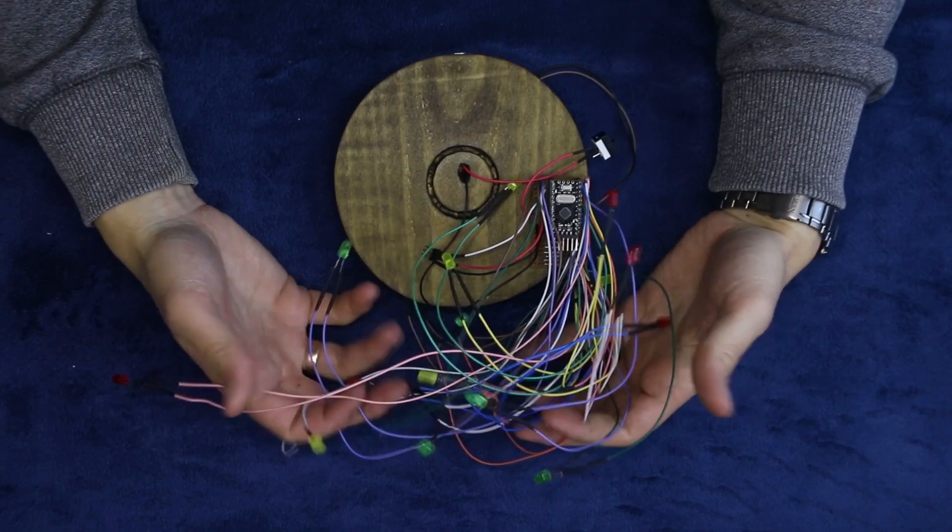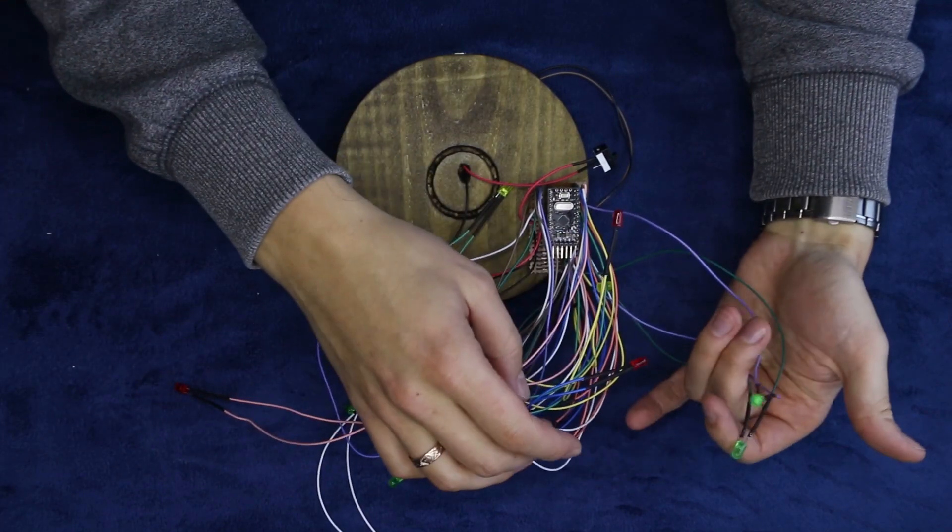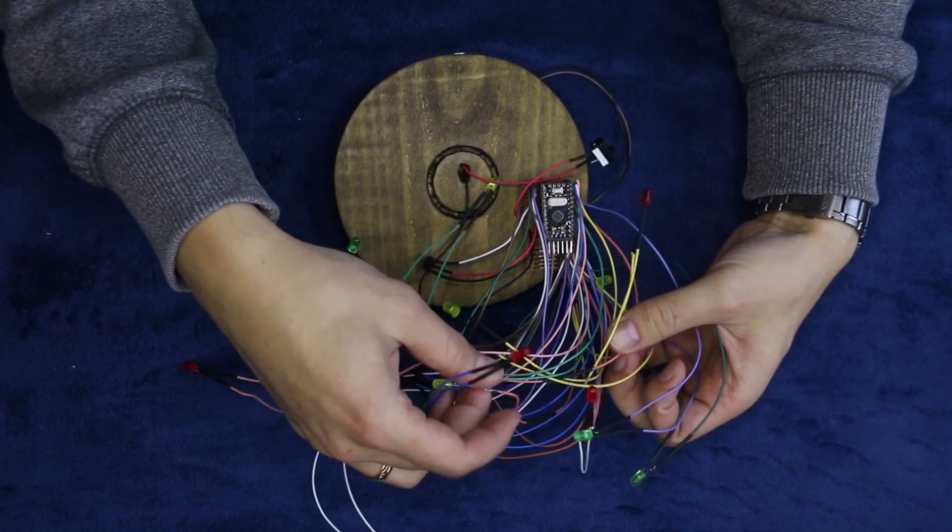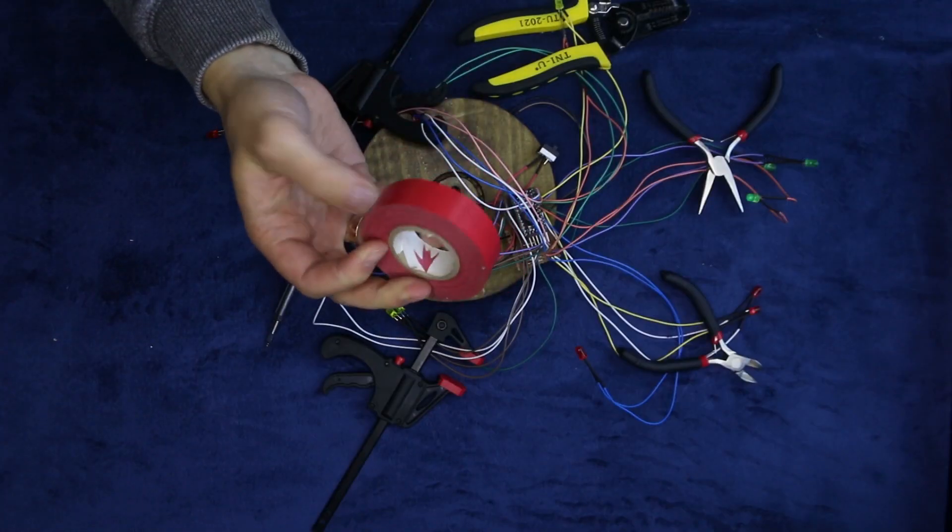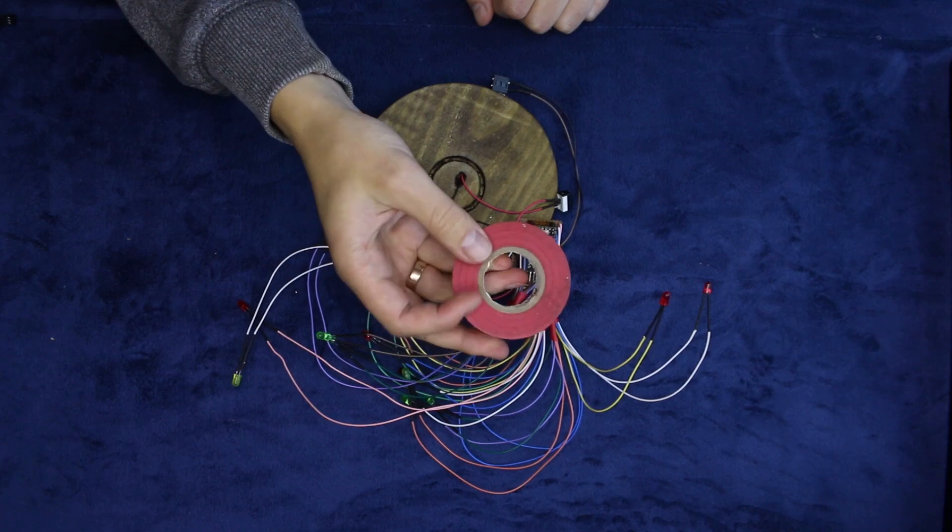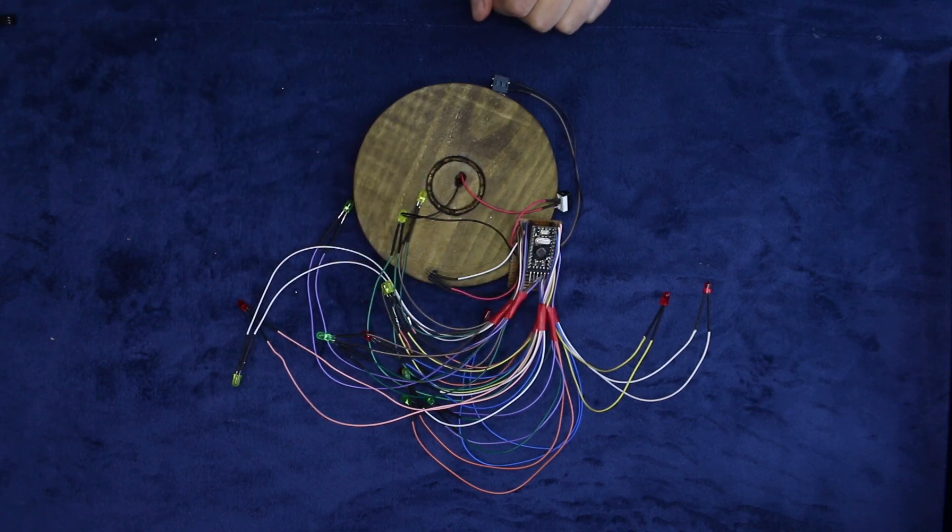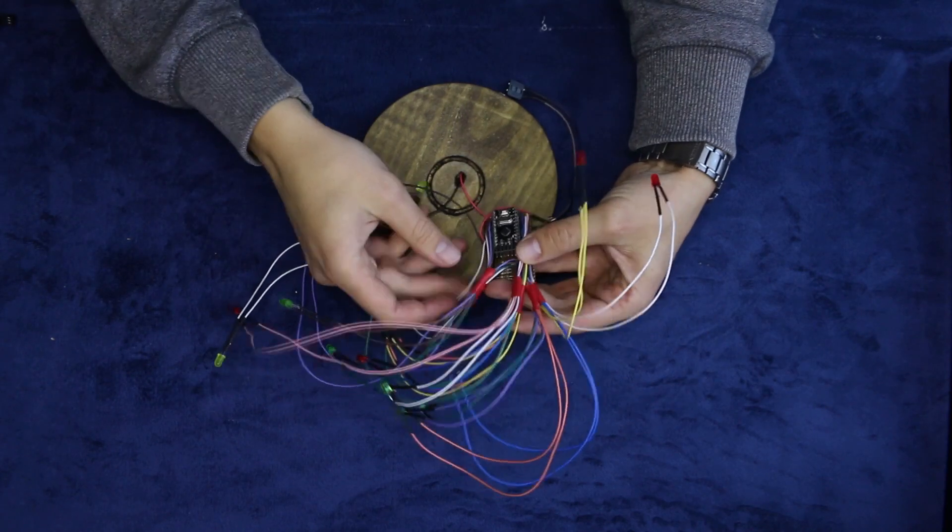It does seem like a mess. And I need to sort it out if I want to fit the electronics inside of the trunk of the Christmas tree. I'm putting the LEDs in the groups of three. Much better. That is two groups, or six LEDs, on each tier of the Christmas tree.